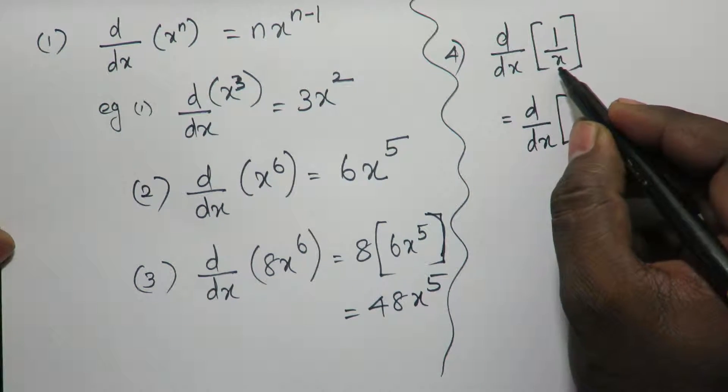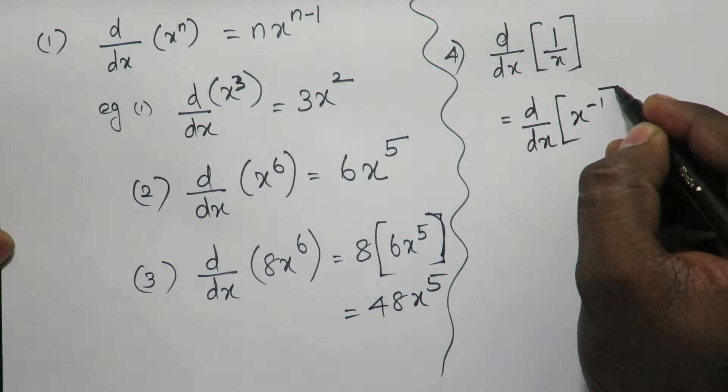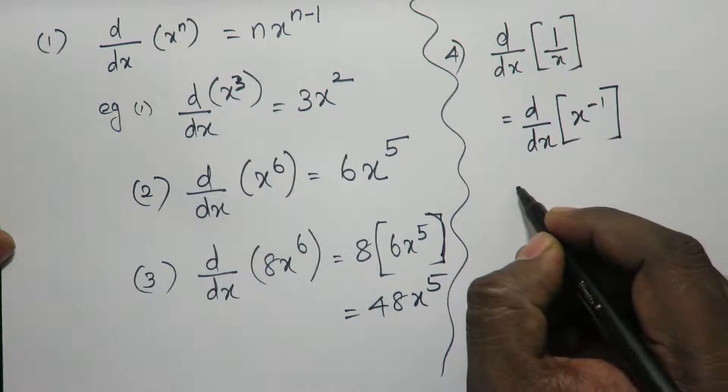So to solve this one what you do is we'll make a small change. When this x goes to the numerator from denominator, this becomes x to the power minus 1. So when you differentiate,